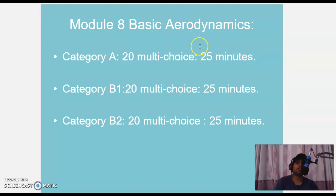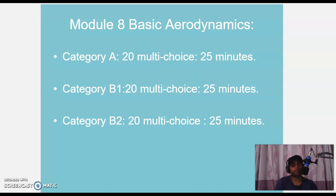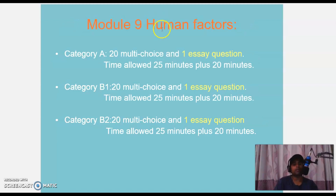Module 8 Basic Aerodynamics is common to Categories A, B1 and B2 — everyone gets 20 MCQs and 25 minutes. Module 9 Human Factors: Category A 20 MCQs and one essay question — 25 minutes for MCQs and 20 minutes for the essay.